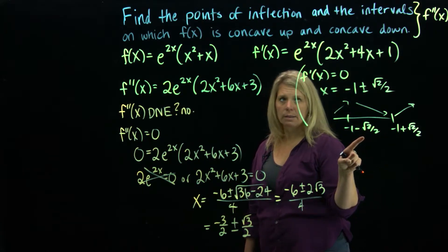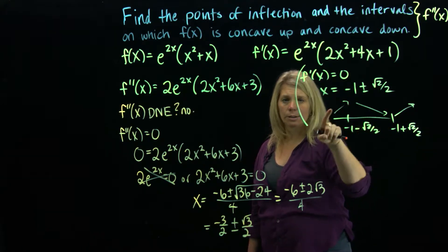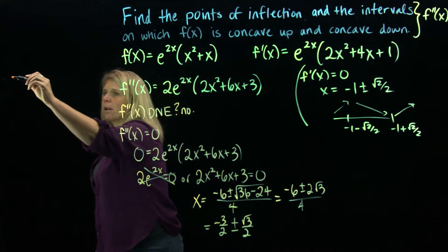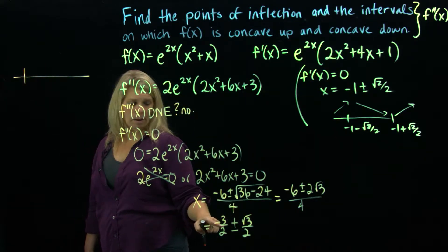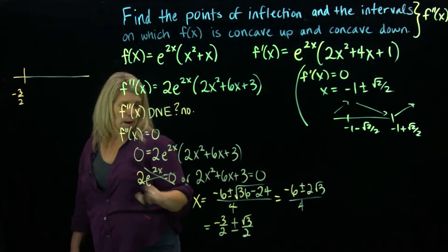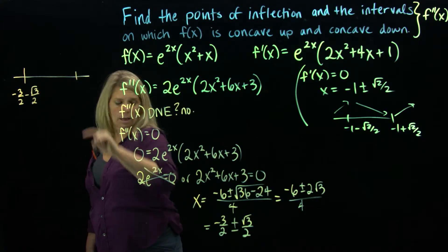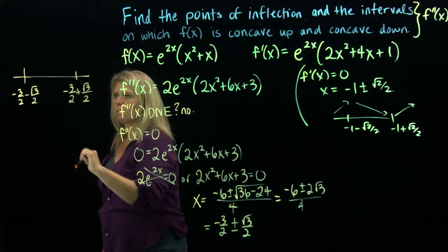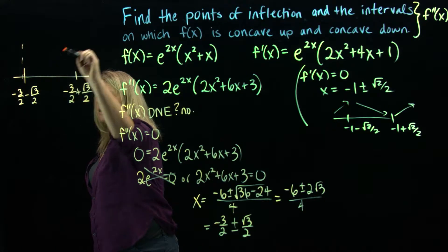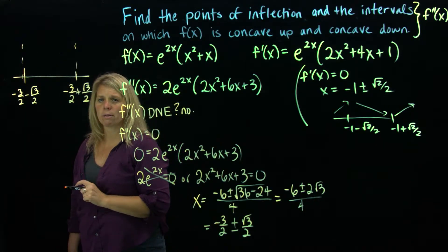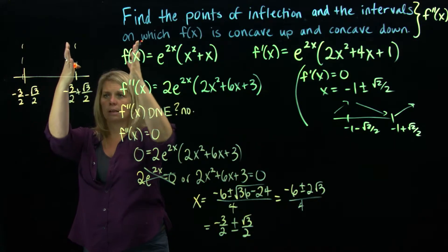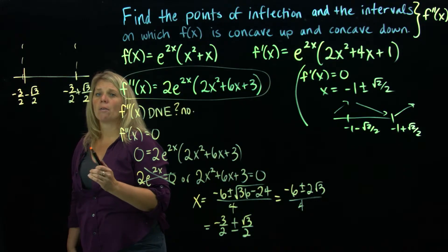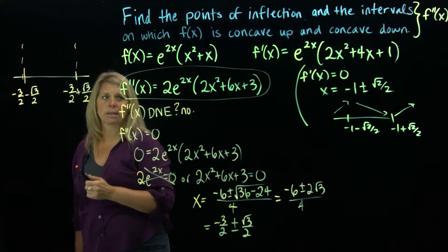Just as I made a sign chart with the first derivative to tell whether the function was increasing or decreasing and where the extrema were, I'll do the same with the second derivative using these values. On the number line, negative 3 halves minus square root of 3 over 2 goes on the left, and negative 3 halves plus square root of 3 over 2 on the right. Decimal approximations can help confirm which is larger. I'll plug test values from each region into the second derivative, only caring whether the result is positive or negative.